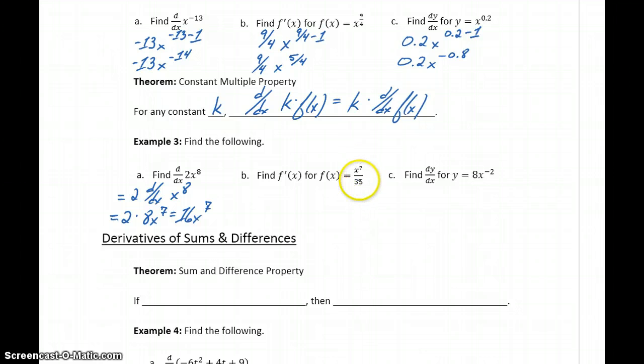Similarly here, with x to the 7th over 35, our constant multiple is 1 over 35. So we could write this as 1 over 35 times the derivative of x to the 7th. That'll give us 1 over 35 times 7x to the 6th or x to the 6th over 5 by reducing the 7 over 35.